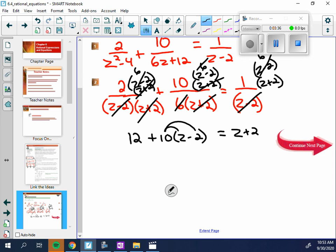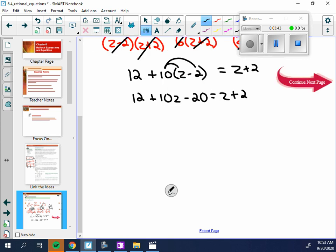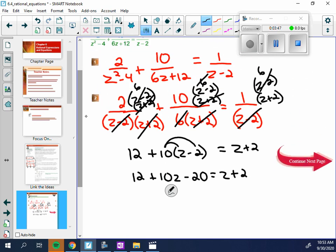Distribute. So I have 12 plus 10z minus 20 equals z plus 2. Why don't I have to get all my z's together on one side? Did I make a mistake? Where did the 6 go? Oh, thank you. This one has a 6 here. So then I lied. What's this going to be? 12z. Sorry. 6z plus 12. Thanks for catching that.